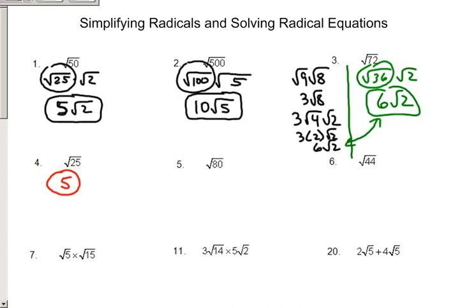80 is another common one that's messed up. It's the square root of 16 times the square root of 5. This becomes 4 root 5. There's your answer.